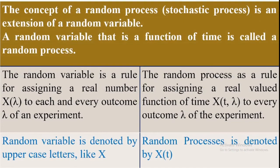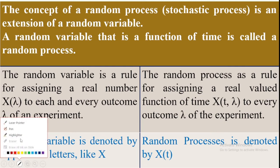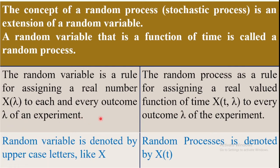What is a random variable? A random variable may be defined as a rule or functional relationship that assigns real numbers to each possible outcome of a random experiment. This is the definition of a random variable.